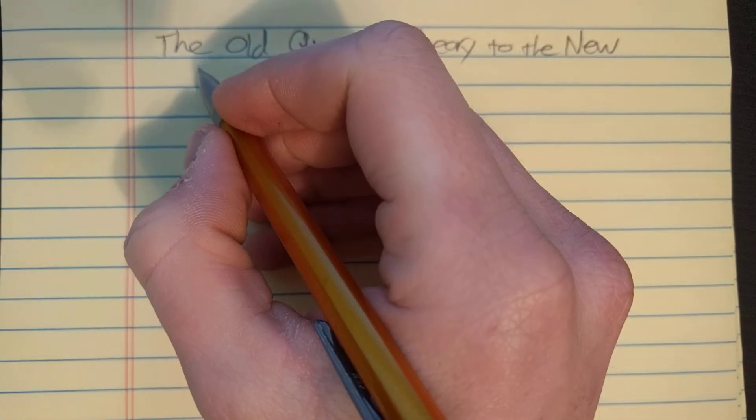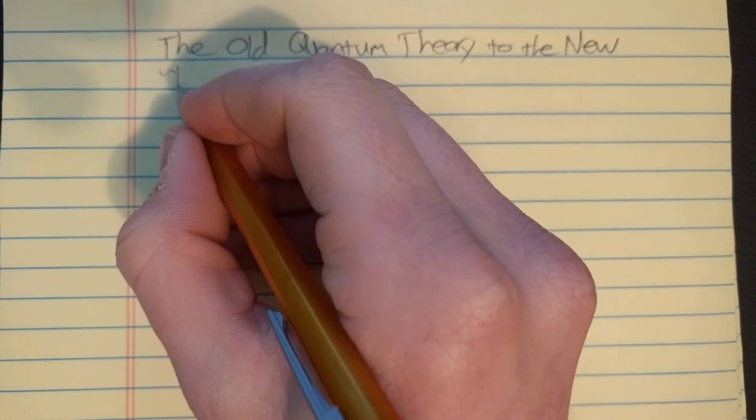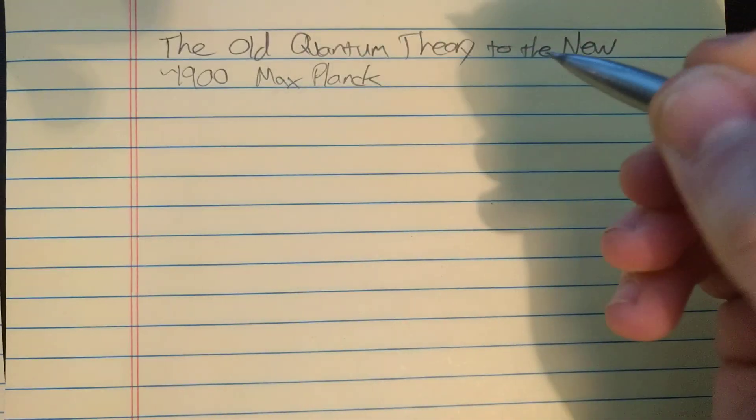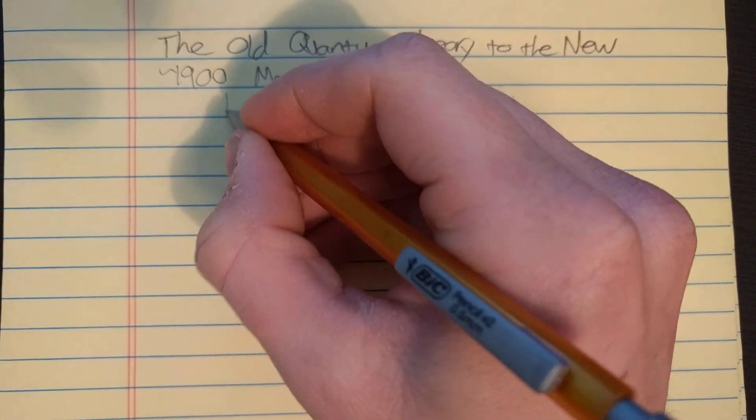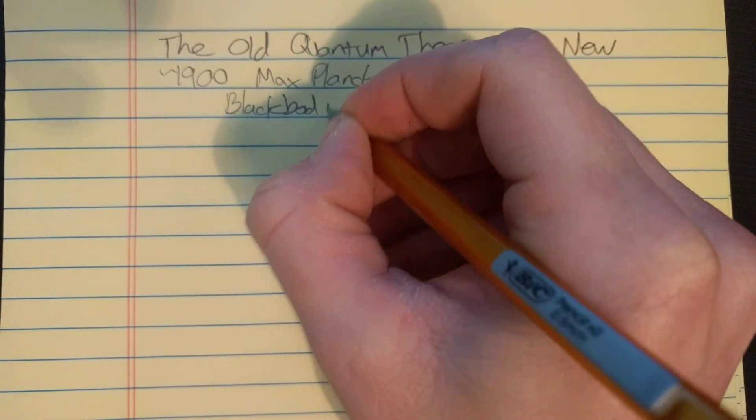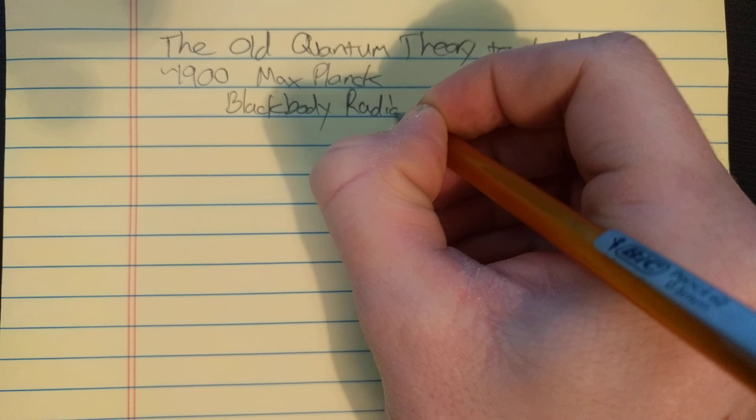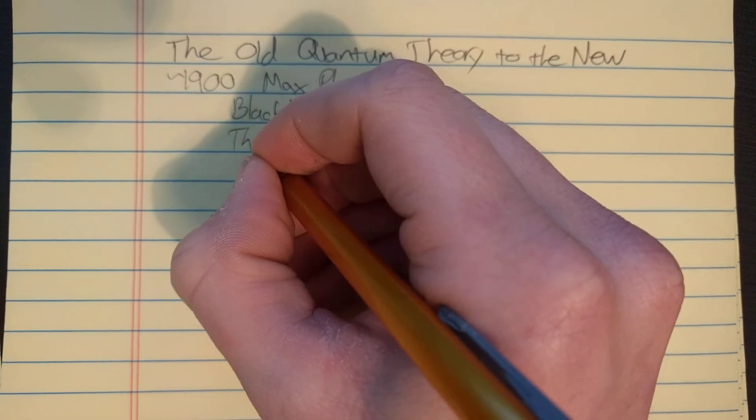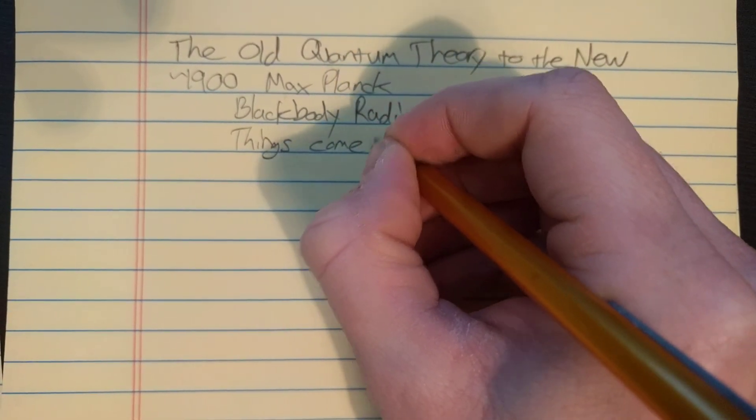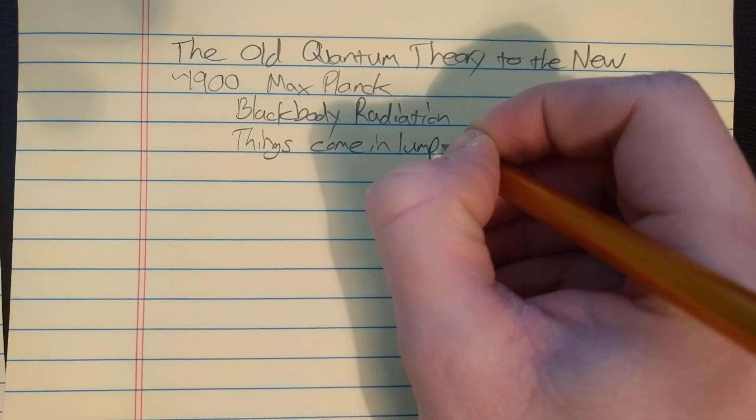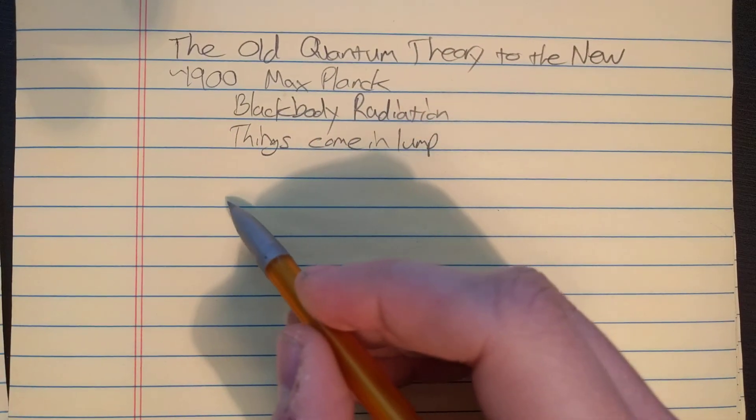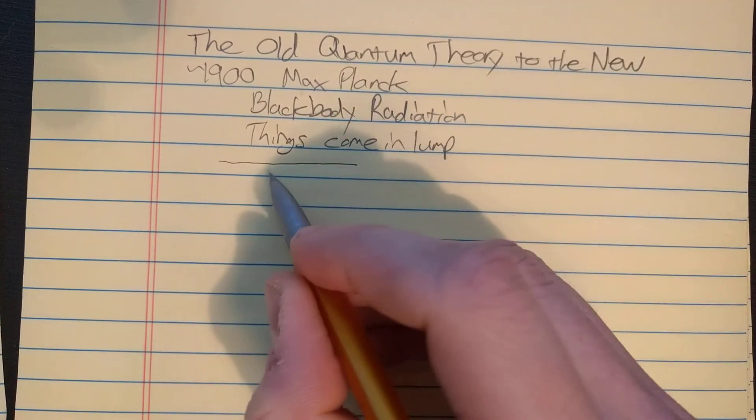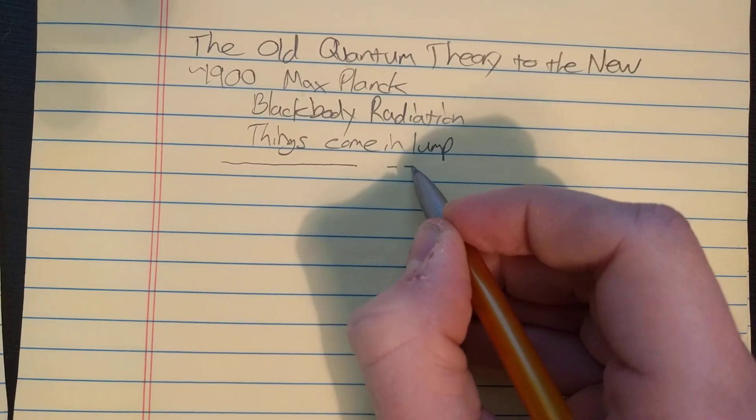Some people use those terms, not everybody. So around 1900, Max Planck used this idea of his to explain black body radiation. I won't talk about black body radiation, but in the future I may do another video on that. His idea was that things come in lumps. Not everything is completely continuous. By continuous I mean this is a continuous line I'm drawing, but things aren't actually that way. Things are actually discrete.